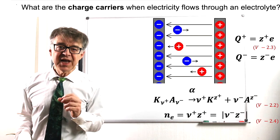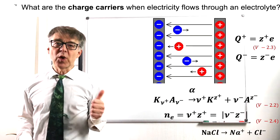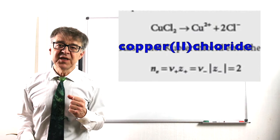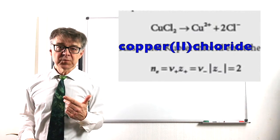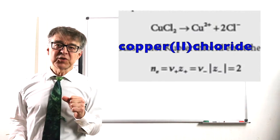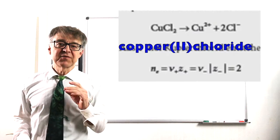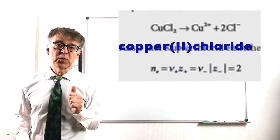With NaCl, N sub E equals 1. With copper chloride, N sub E equals 2. Two moles of positive and two moles of negative charge result from dissolving of one mole of copper chloride in water.